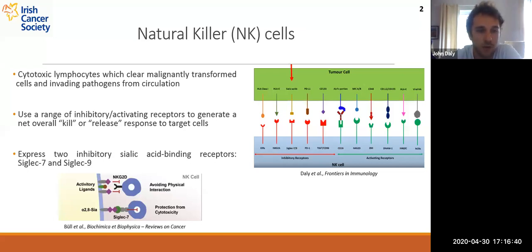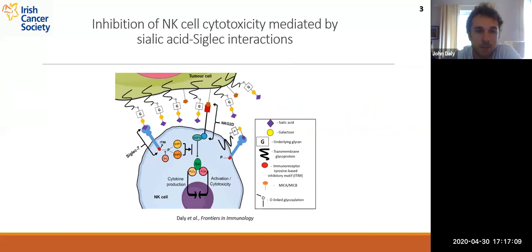Recently, attention has turned towards the role of sialic acids in binding to sialic acid-binding immunoglobulin-like lectins, or Siglecs. These are a family of receptors containing both activating and inhibitory members. However, only two inhibitory members are expressed by NK cells: Siglec-7 and Siglec-9. Siglec-7 is expressed by nearly all NK cells, whereas Siglec-9 is expressed by a subset of CD56-dim NK cells. Similarly to the checkpoint inhibitor PD-1, Siglec receptors act by recruiting intracellular phosphatases via their intracellular ITIM motif upon binding to their ligands. These phosphatases, SHP1 and SHP2, once activated, inhibit activation pathways within the NK cell, leading to dampening of their activation and cytotoxicity. This results in the target cell being released and allowed to continue throughout the circulation instead of being destroyed.